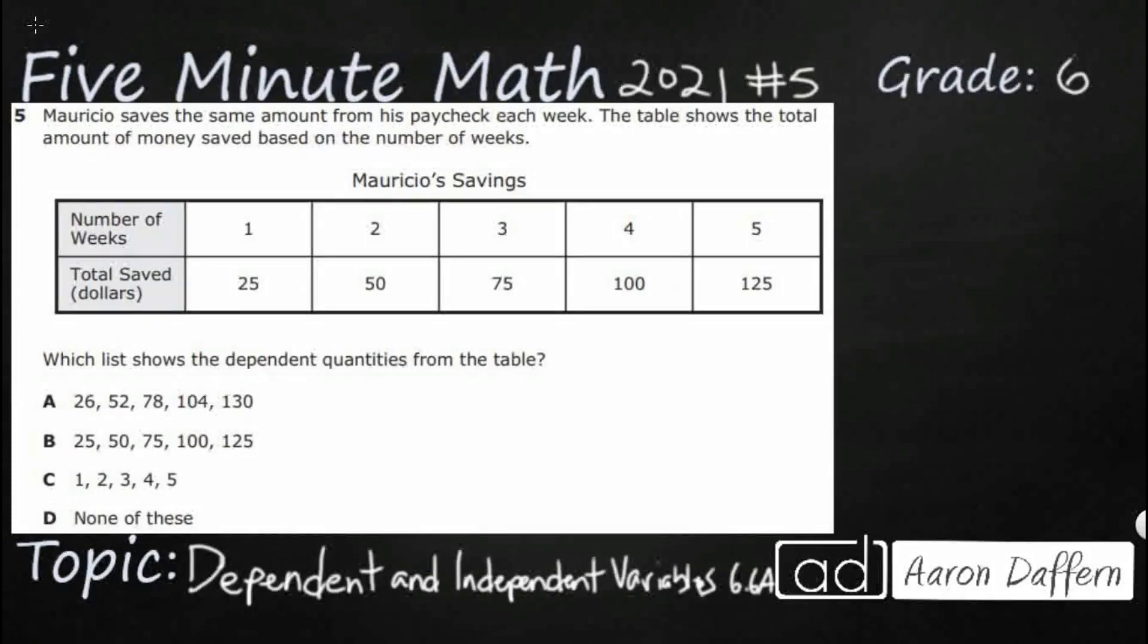Hello, and welcome to 5-Minute Math. Today we are looking at the 6th grade concept of dependent and independent variables. This is standard 6.6a in the great state of Texas, and we are using item number 5 of the 2021 released STAAR test.